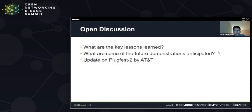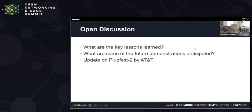Regarding future demonstrations: one thing we look to be supporting at the end of this year is a demonstration related to CBRS fast domain proxies, largely leveraging our CBRS devices. We're also looking at future use cases rounding out more FCAPS functionality and more O1 interface capabilities, working closely with AT&T to see what we can best target for 2021 in that area.